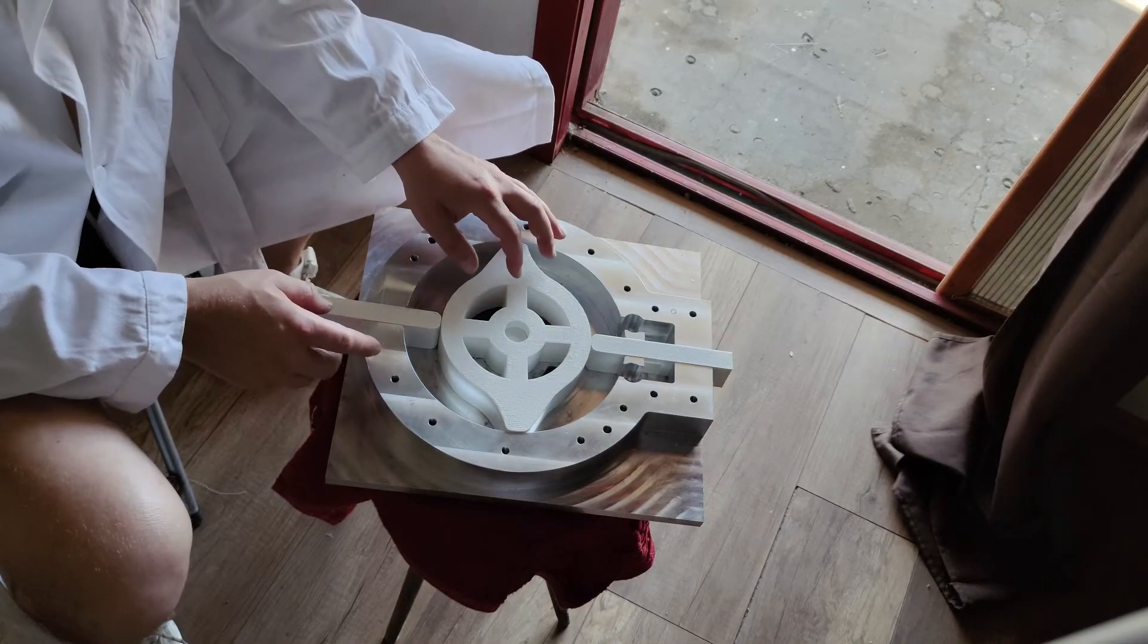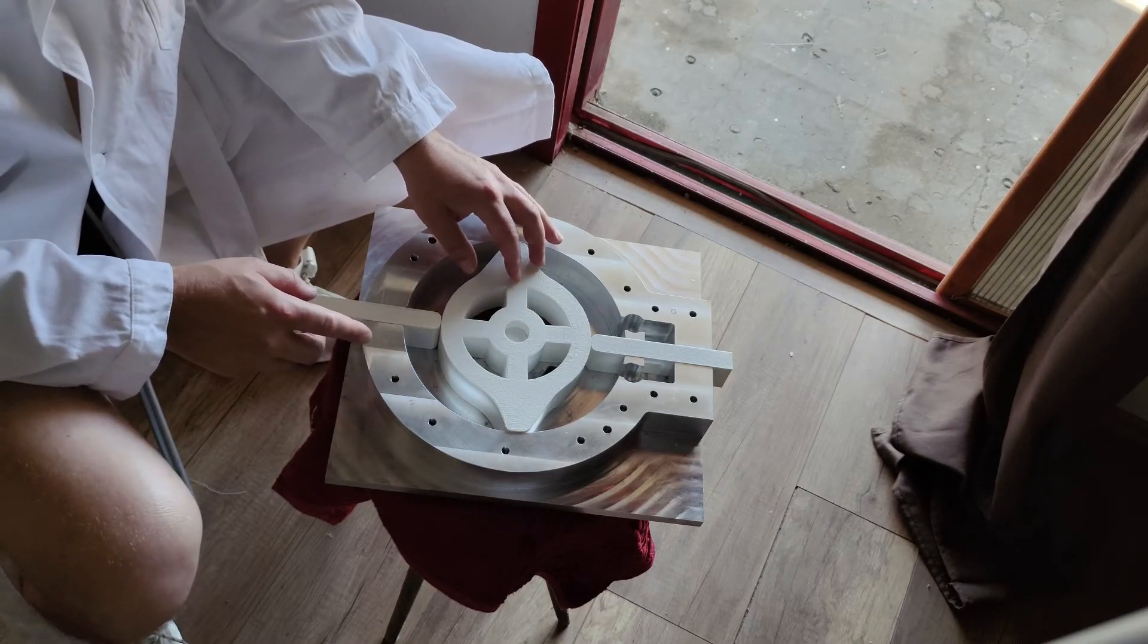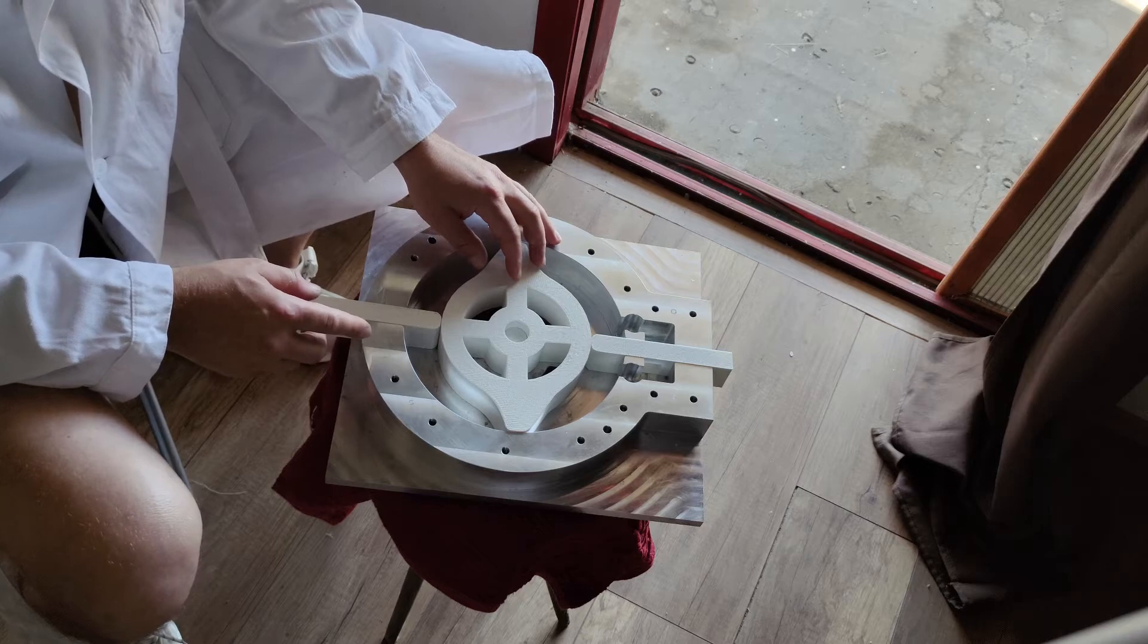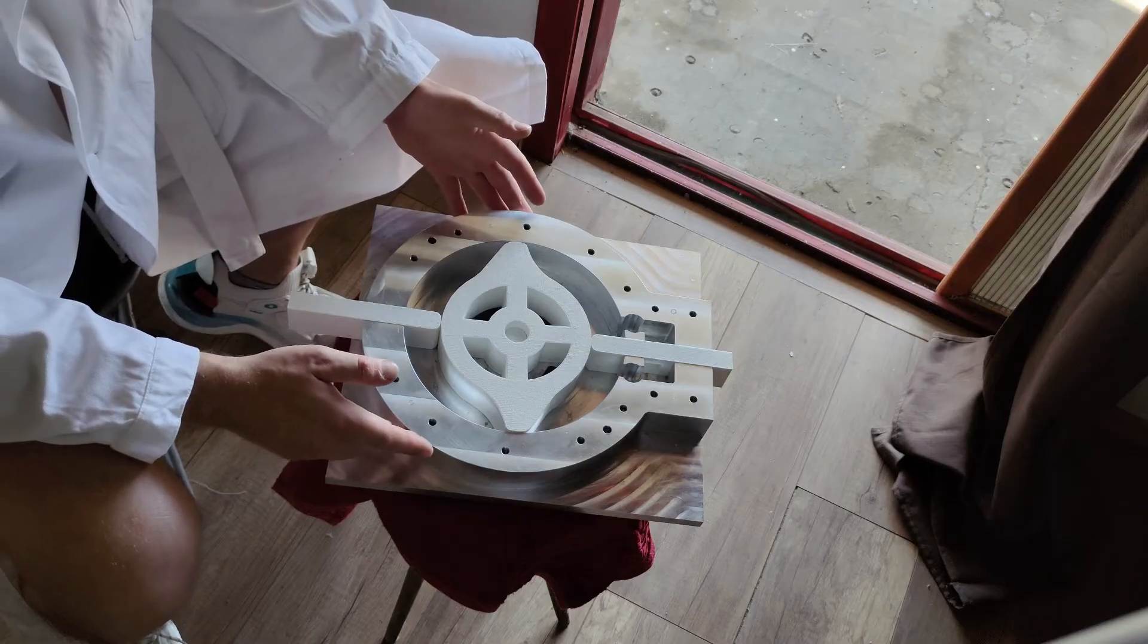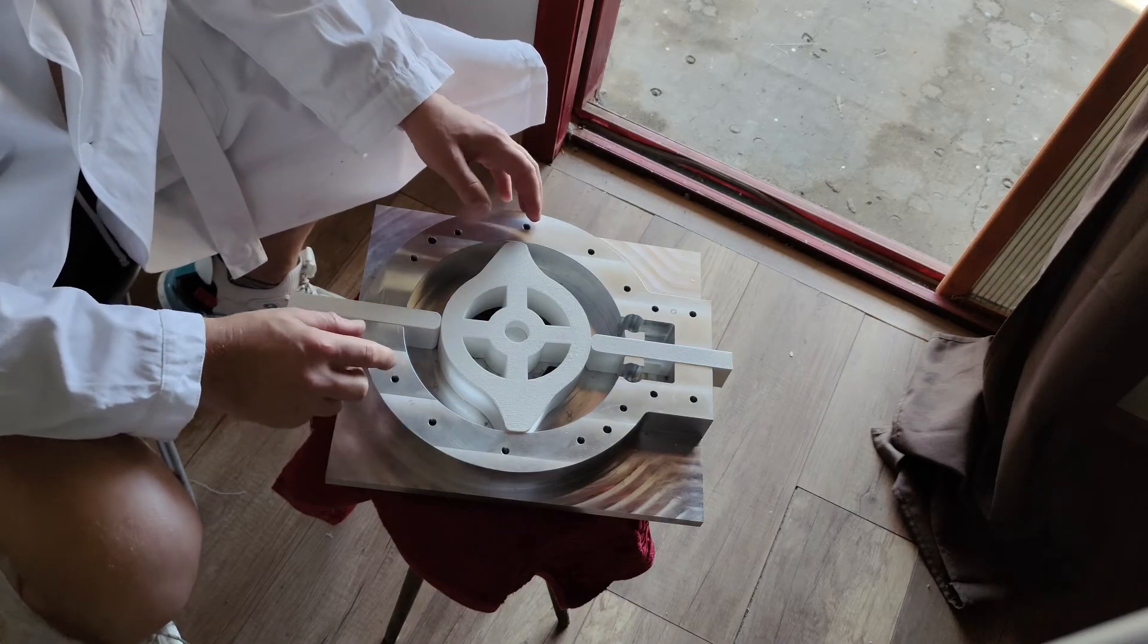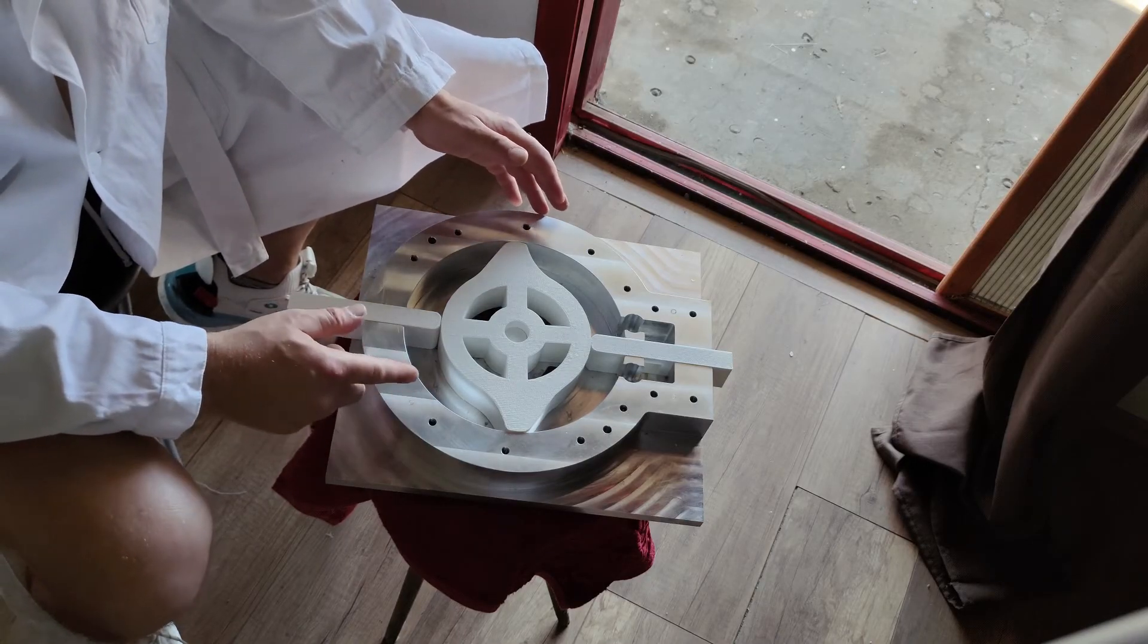Rotor performs two work cycles per revolution. One, this ring engine is equivalent to a two-cylinder engine. Two rings, four-cylinder etc.